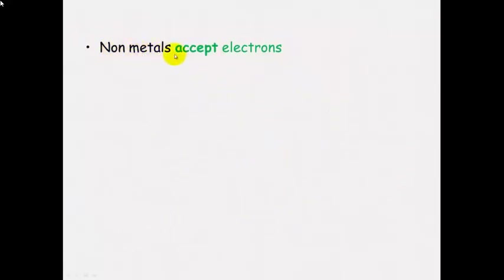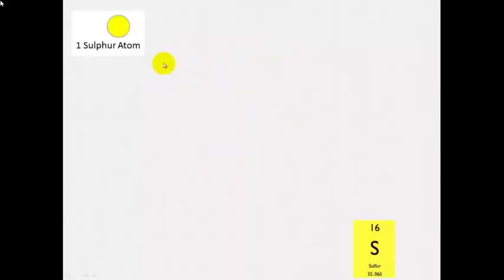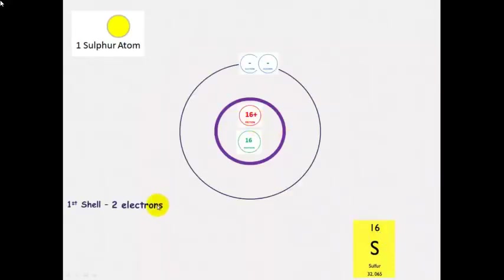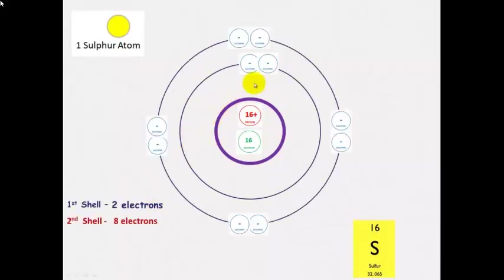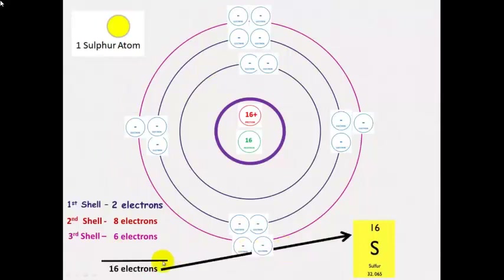Non-metals, on the other hand, will accept electrons to form anions, which have a negative charge. Looking at the sulphide ion, it has a 2 negative charge, and this is how it's formed from the sulphur atom. Sulphur has an atomic number of 16, which means it has 16 protons. In a neutral atom it will have 16 electrons — 2 in the first shell, 8 in the next shell, and 6 electrons on the outer shell, which are its valence electrons.